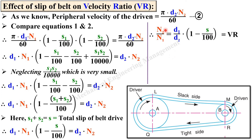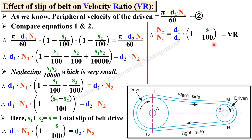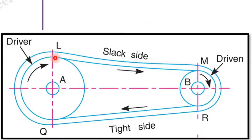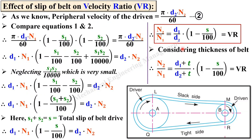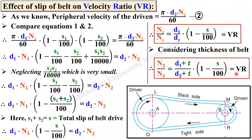Previously we derived the velocity ratio as N2/N1 = D1/D2 only, where we did not consider slip. If the value of slip is significant, you have to consider it and multiply by the term (1 − S/100), where S is the total slip of the belt drive. Further, considering the thickness T of the belt, the formula is modified to N2/N1 = (D1 + T)/(D2 + T) × (1 − S/100). This is the final equation considering both belt thickness and slip. Thanks for watching — please hit the like button to appreciate it.